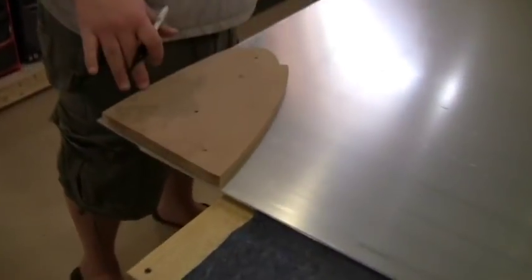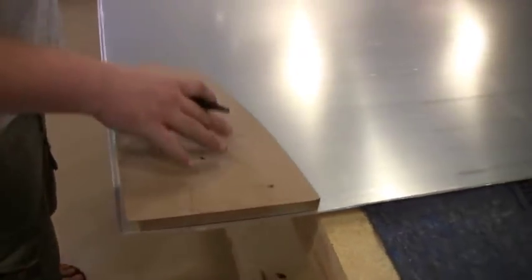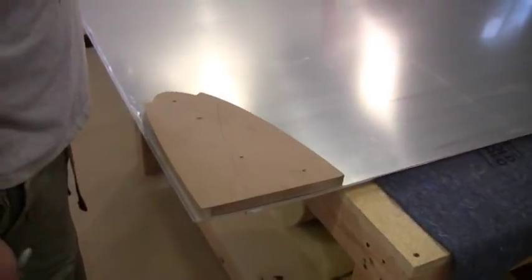These are the forms that we're going to use to router the final shape. So that's what we're going to use to trace. And then when we rough cut, we'll cut around that and then use these to do the final cut.